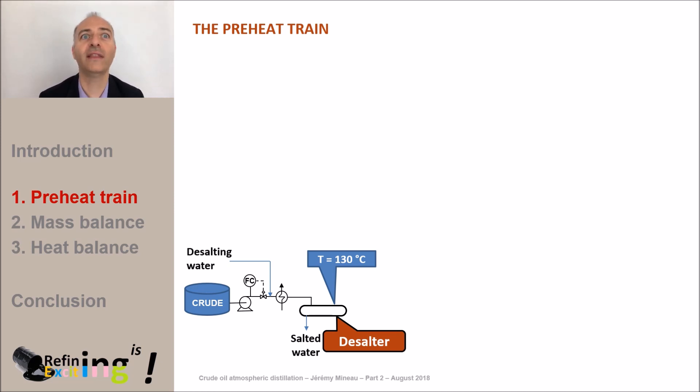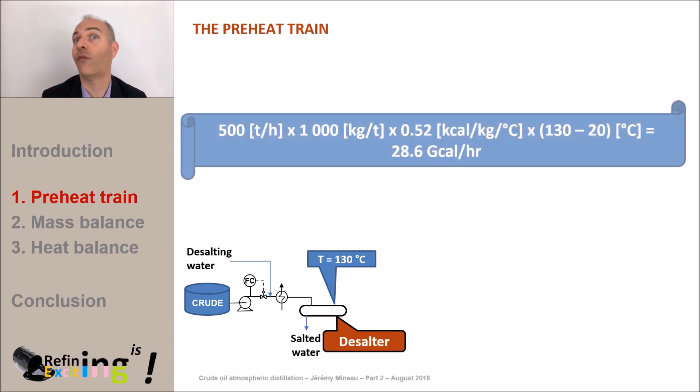It should be noted that this water can be injected just upstream of the desalter or just at the discharge of the crude pump after the tank. To reach 130 degrees C an energy quantity of about 28 gigacalories per hour is necessary. For estimating this energy demand we considered that the crude was stored in the tank at a temperature of 20 degrees C.